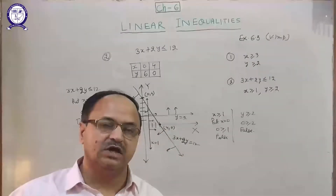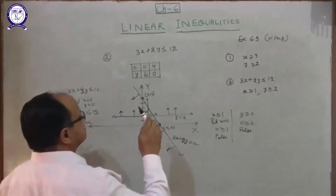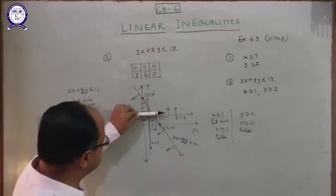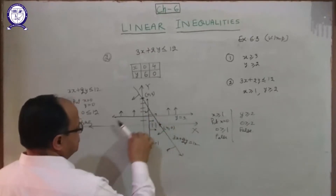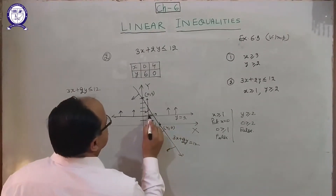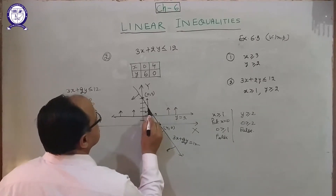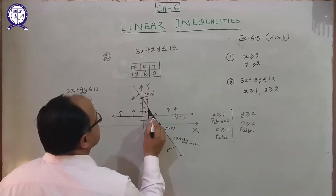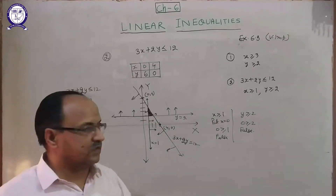Which portion satisfies all three equations? Look on the board: this region is away from origin, this region is towards the origin, and this region is away from origin. The correct solution is this intersecting region. This is the solution of question number 2. Clear? Okay, thank you.